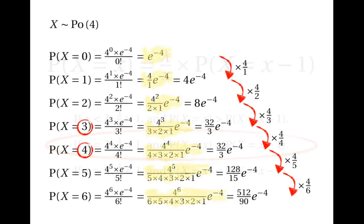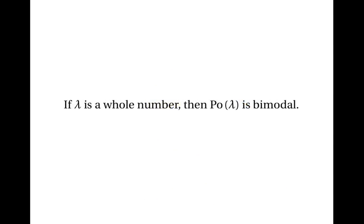Let's return to our example to see how this worked. Here, lambda was equal to 4, and 3 events and 4 events gave us the joint highest probabilities. Up until 3 events, the probability kept increasing. From 3 events to 4 events, it stayed the same. And from 4 events onwards, it kept going down. In general, we can say that if lambda is a whole number, then the Poisson distribution with parameter lambda will be bimodal, meaning there will be two modes. And the modes are lambda minus 1 and lambda.